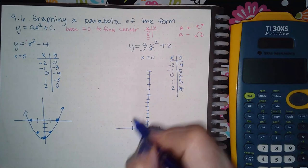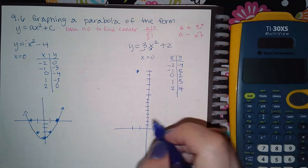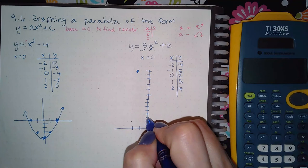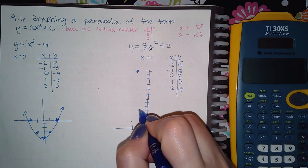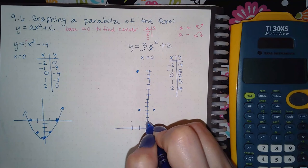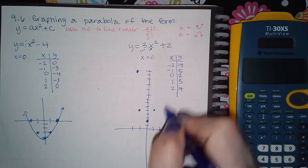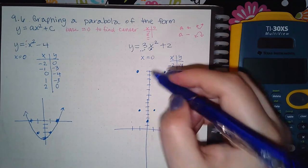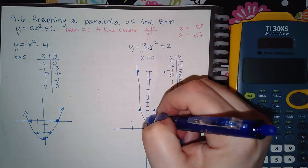So negative two and 14 way up here, negative one and five, zero and two, one and five, and then this guy way up here. So it looks like a really skinny graph but it's like shifted up two units.